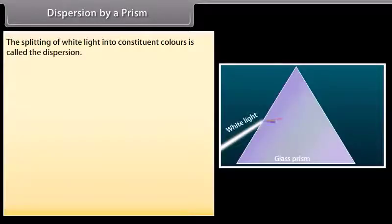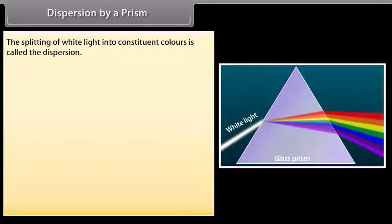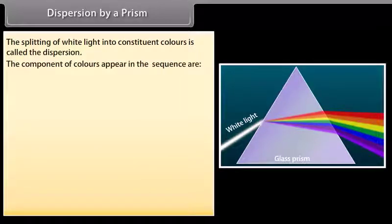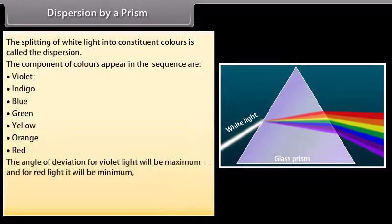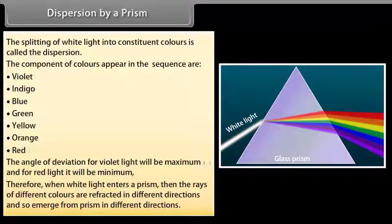Dispersion by a prism. The splitting of white light into constituent colours is called dispersion. The colours appear in the sequence: violet, indigo, blue, green, yellow, orange, and red. The angle of deviation for violet light is maximum and for red light it is minimum. When white light enters a prism, rays of different colours are refracted in different directions and emerge from the prism in different directions.